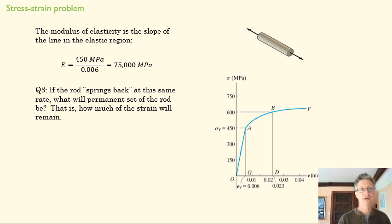Question three: if the rod springs back at this same rate, what will the permanent set of the rod be? That says how much strain will remain. So we know where we are at the end when that stress has been applied. We know that the modulus of elasticity of the strain-hardened metal is the same as the original. And so now we want to figure out what our permanent strain is.